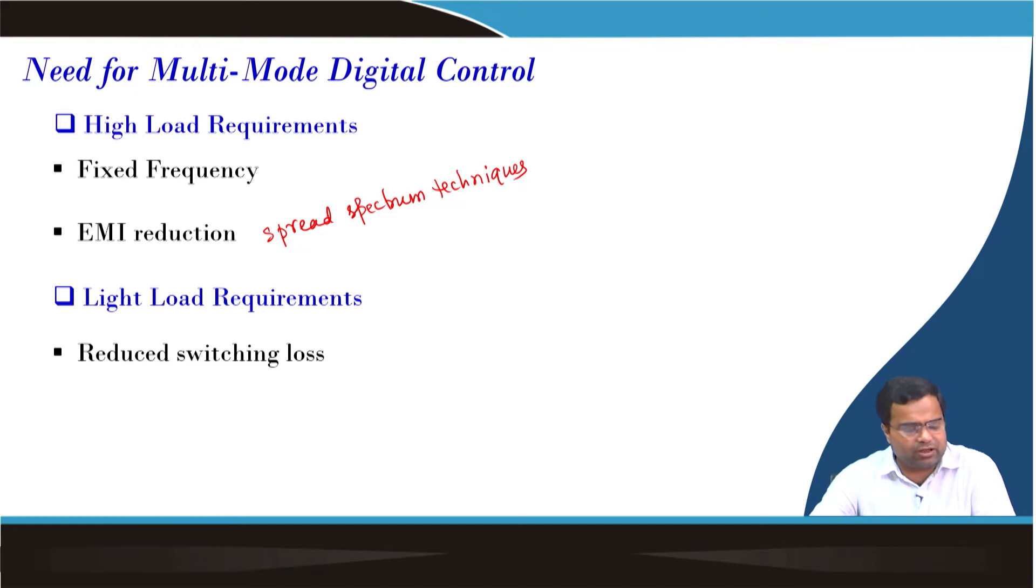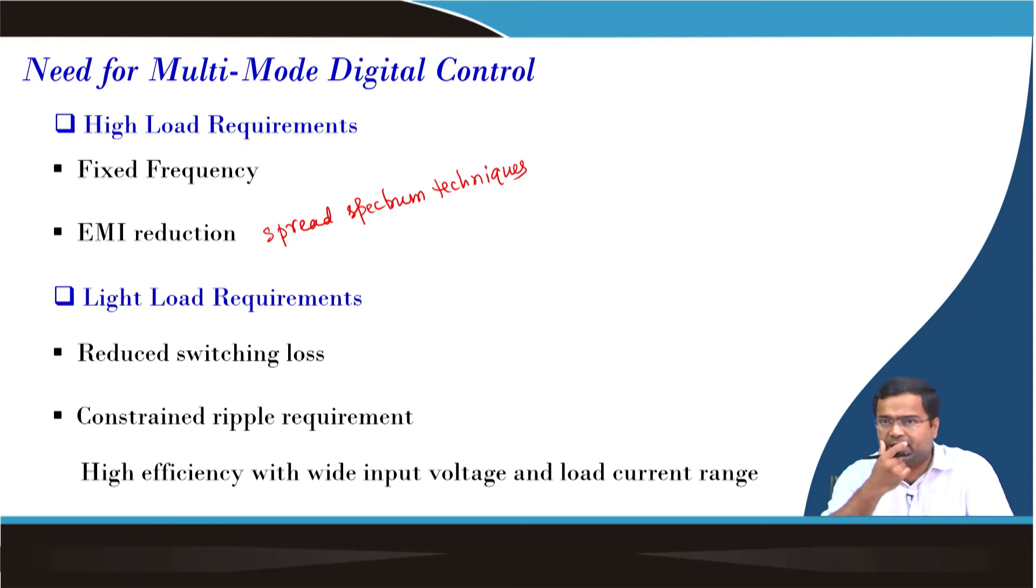For light load requirements, we want to reduce switching loss. Then we want to also consider the constraint in the ripple voltage; it should not exceed too much and should be within the limit. Finally, for all cases, particularly in light load, we need to achieve high efficiency with wide input voltage and load current range.